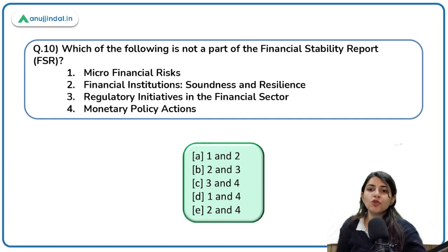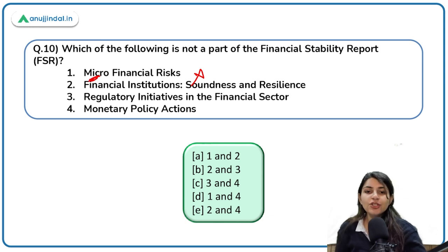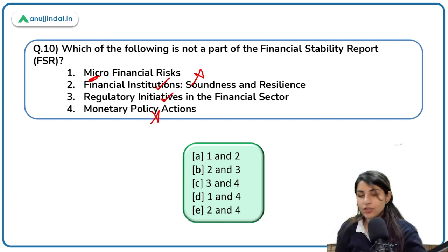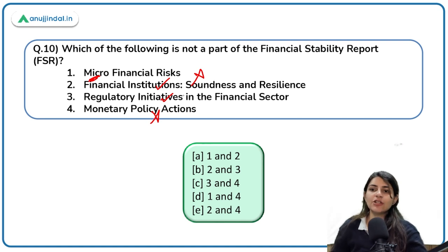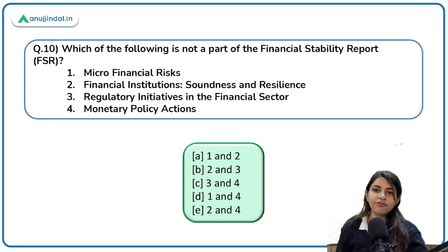Which of the following is not a part of the Financial Stability Report? Microfinancial risks — incorrect; it is macrofinancial risk, not microfinancial. Financial institutions' soundness and resilience — correct part of FSR. Regulatory initiatives of the financial sector — correct. Monetary policy actions — incorrect; there is no such section under the Financial Stability Report. So the second and third statements are correct; the first and fourth are not.